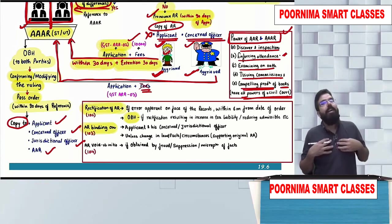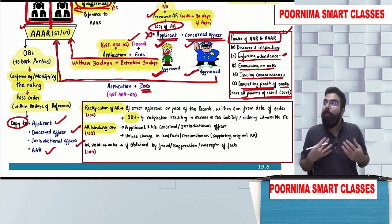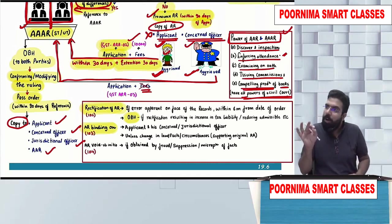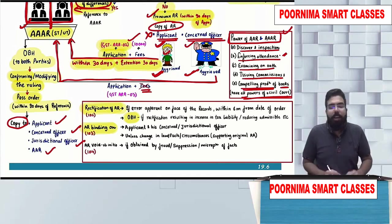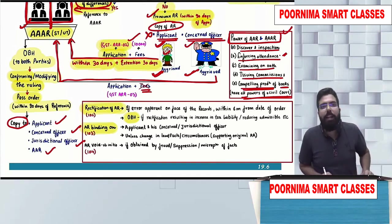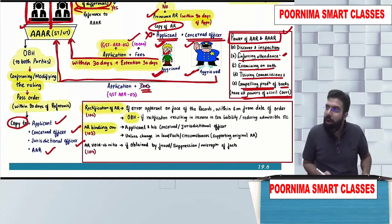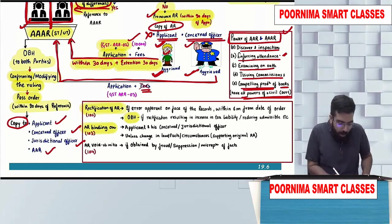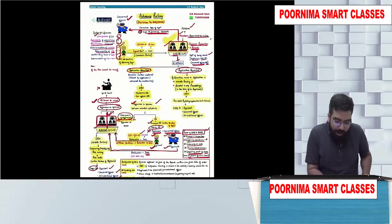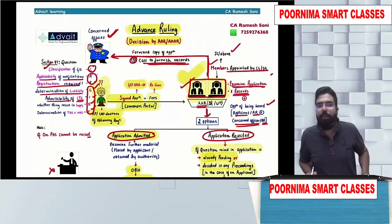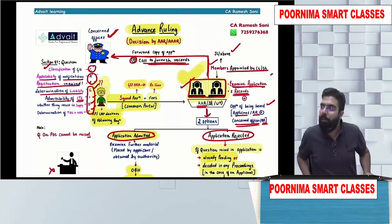If an advance ruling is obtained by fraud or misrepresentation, it is void ab initio. I hope you enjoyed the chapter on advance ruling. Have a great evening everyone, I will see you tomorrow.